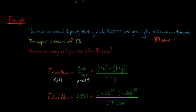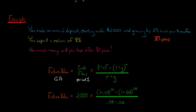1 plus 0.02, and it's 0.02 because we take 2%, convert it to a decimal, raise that to the 30th power for the number of periods, and then a denominator, we have the discount rate minus the growth rate, right?